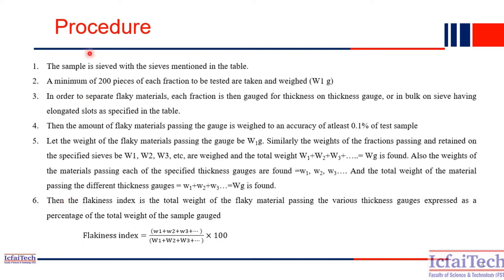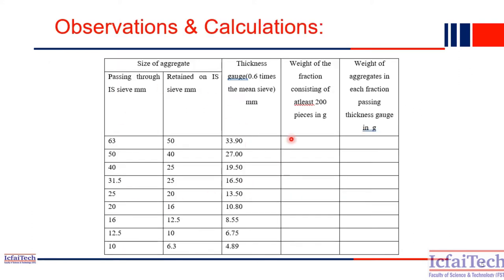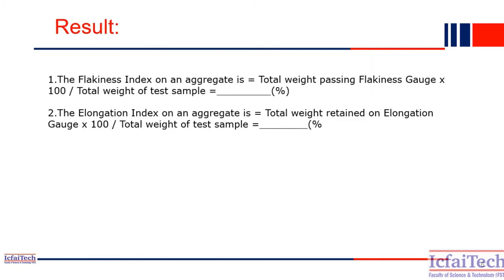These are the procedures we follow for the shape test. First we take the sample, then we sieve it, and then we pass each sample through the flakiness index apparatus as well as the elongation index apparatus. We record the readings and calculate the flakiness index and elongation index using the observation table, filling all values to find the final outcome. If these values are more than 15%, we should not use this material for construction.